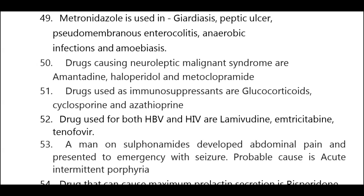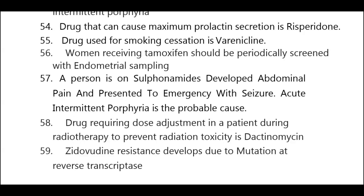Drugs used for both HBV and HIV are lamivudine, emtricitabine, and tenofovir. A man on sulfonamides who developed abdominal pain and presented with seizure — the probable cause is acute intermittent porphyria. Drug that can cause maximum prolactin secretion is risperidone. Drug used for smoking cessation is varenicline.